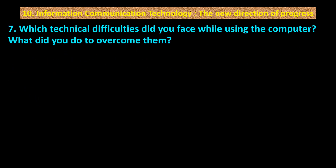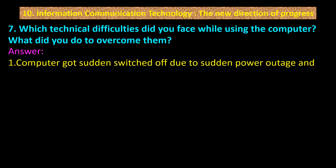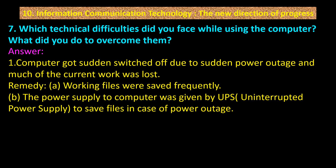Question number 7: Which technical difficulties did you face while using the computer and what did you do to overcome them? Point 1 — the computer got suddenly switched off due to a power outage and much of the current work was lost. Remedy: working files were saved frequently, and the power supply to the computer was given by UPS (uninterrupted power supply) to save files in case of power outage.